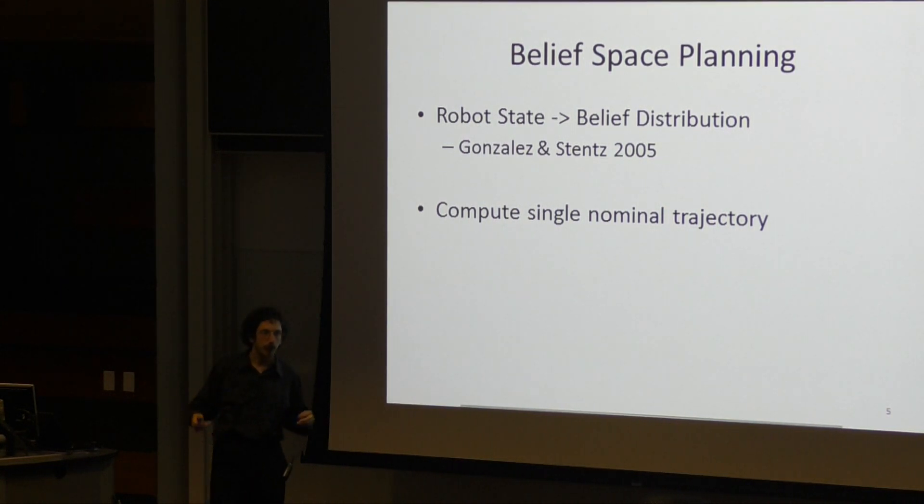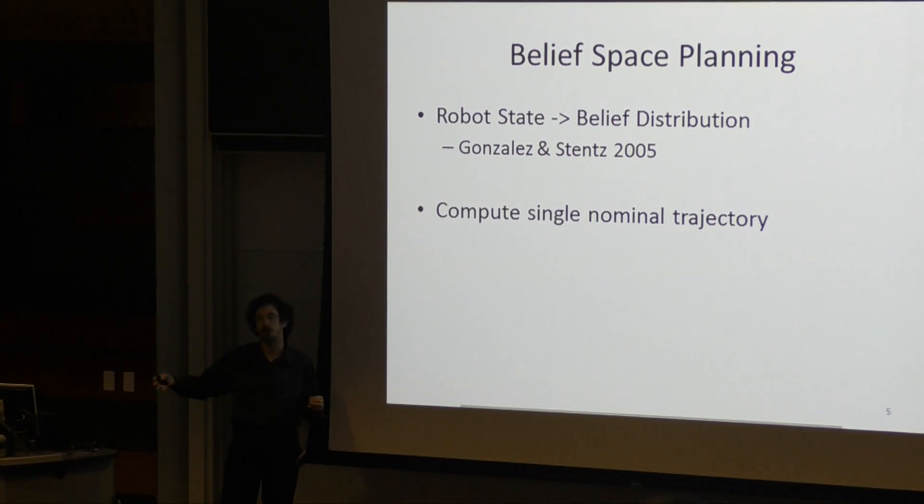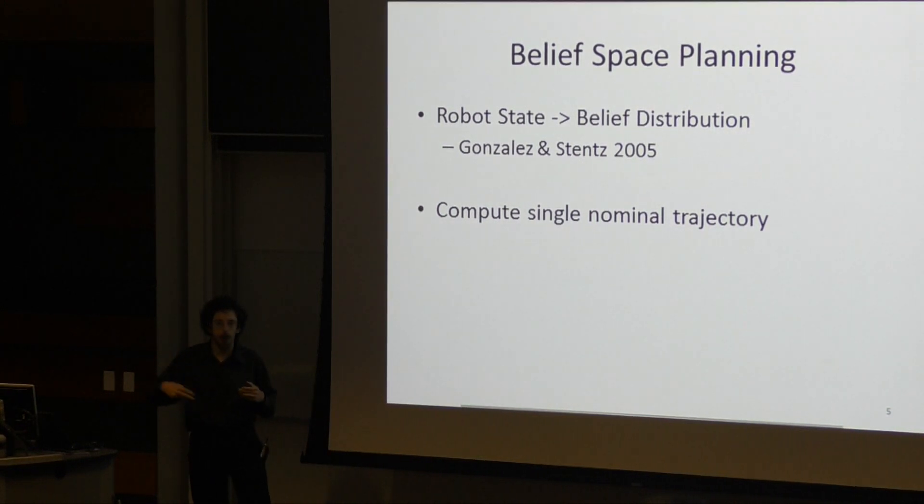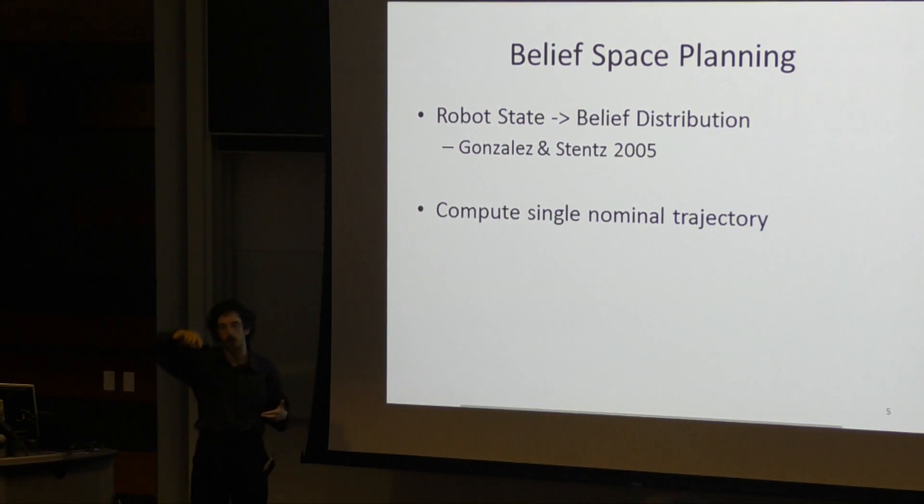This is substantially more efficient than solving a POMDP because you're not computing a natural control policy to handle arbitrary inputs of observations. Instead, you're assuming some notional closed-loop control system and calculating what the uncertainty in position is under nominal observations, and then you're computing only a single nominal trajectory through the space.